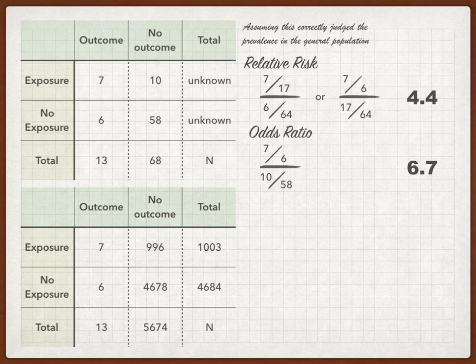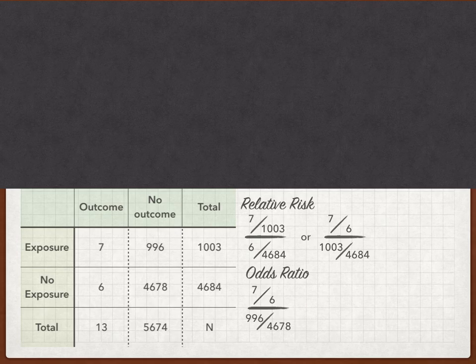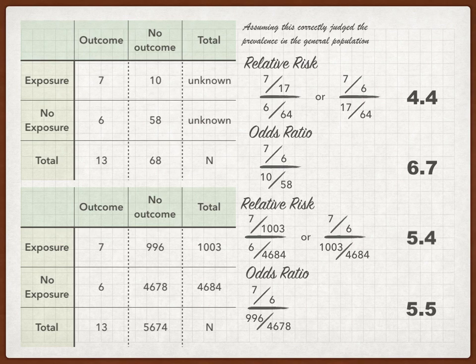Now let's look at the population sample on the bottom left. We've got a lot more people in the no-outcome group — the non-disease population is much larger, the outcomes are diluted out, and it's a much less sick population. Our relative risk here is 7 out of 1,003, and in the non-exposed group it's 6 out of essentially 5,000. The odds — done vertically — are 7 outcomes in the exposed group to 6 in the non-exposed, and the ratio of no-outcomes is 996 to 4,678. This yields a relative risk of 5.4 and an odds ratio of 5.5 — actually pretty similar to our top group, and much more similar numbers to each other.